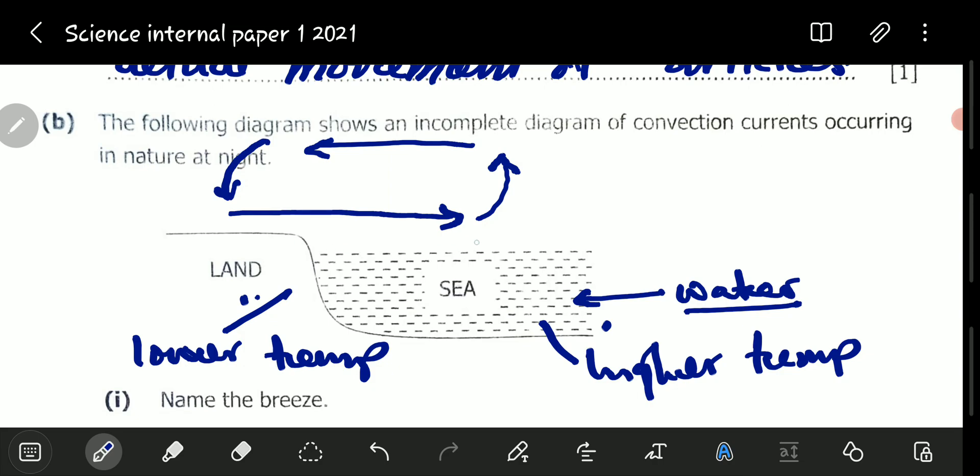Colder air from the sky above will drop to the bottom, and the warmer air will try to fill up the gap. Because the movement is in a cyclic manner, this is called a convection current. This is how our convection current is going to look like.